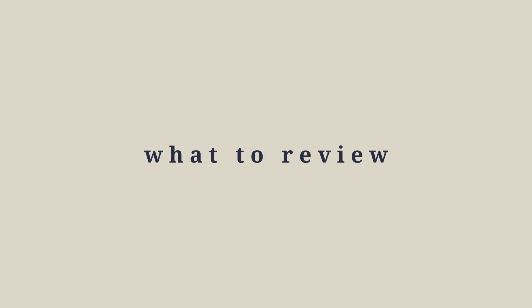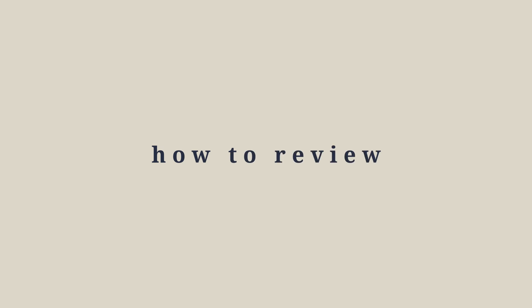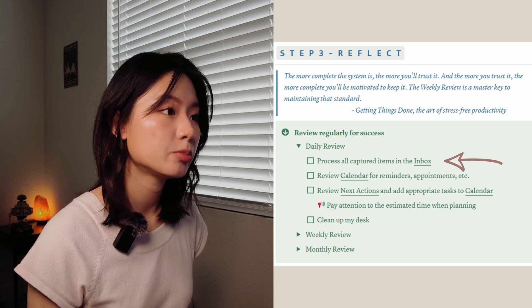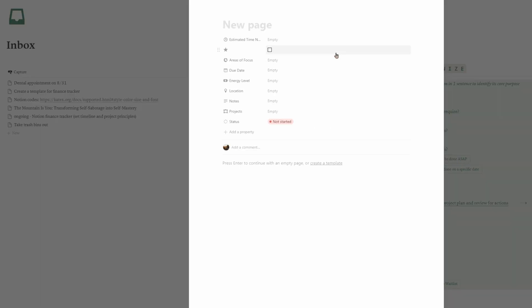The purpose of the daily review is to plan your day and stay focused on immediate priorities. It's the first thing I do every morning and typically takes just 10–15 minutes to go through my ground-level tasks. First, process everything you captured yesterday by placing it in the appropriate databases. This is also the time to tackle any action items that take less than 2 minutes. If something cannot be done right away due to time or location, add it to the next actions list and mark it as a quick task.